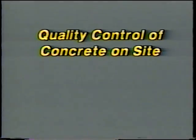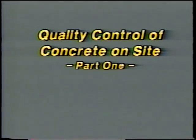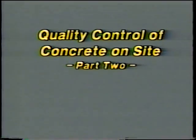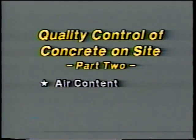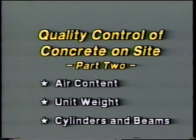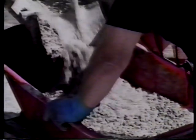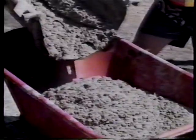Here in part one we'll look at sampling concrete and at the test methods for temperature and slump. In part two we look at the test methods for air content and unit weight, as well as the procedures for making cylinders and beams. Our first topic then is sampling.